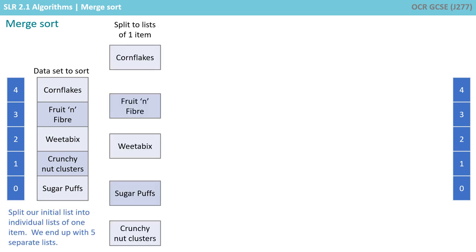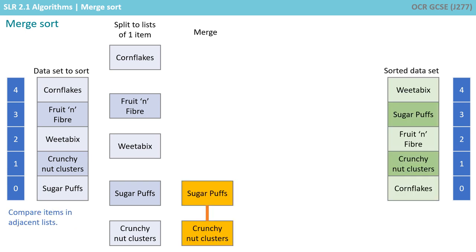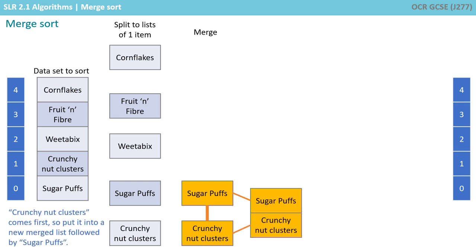We start by splitting our initial list into individual lists of one item. We end up with five separate lists. We then compare items in adjacent lists, so we compare Sugar Puffs to Crunchnut Clusters. Crunchnut Clusters comes first, so we put it into a new merged list, followed by Sugar Puffs.